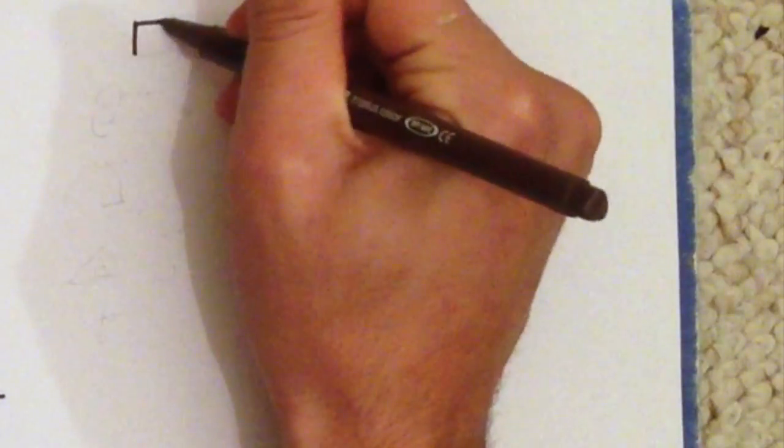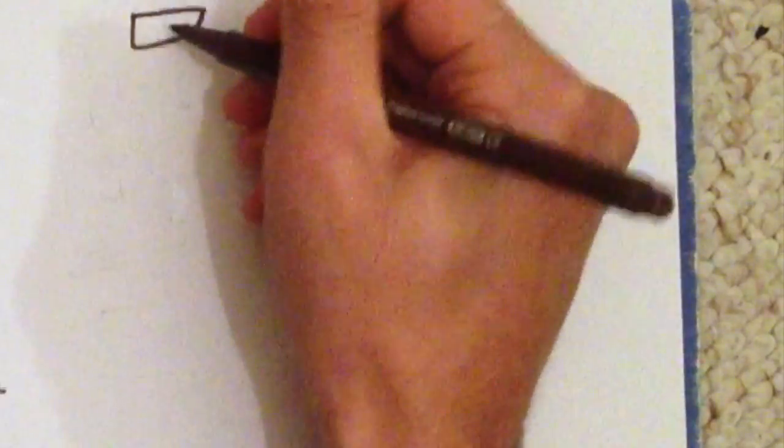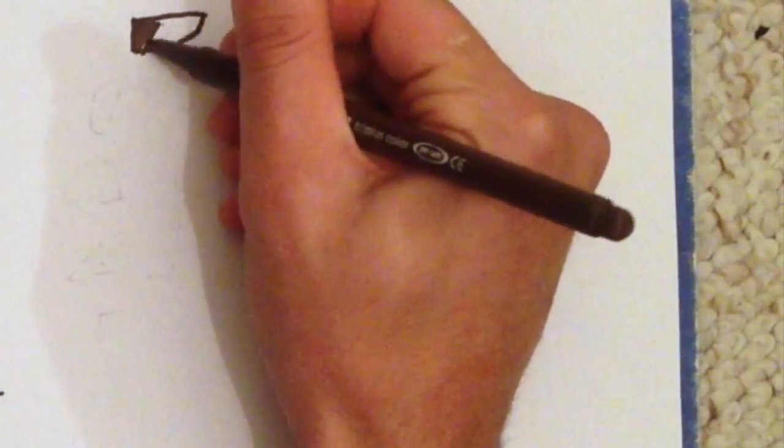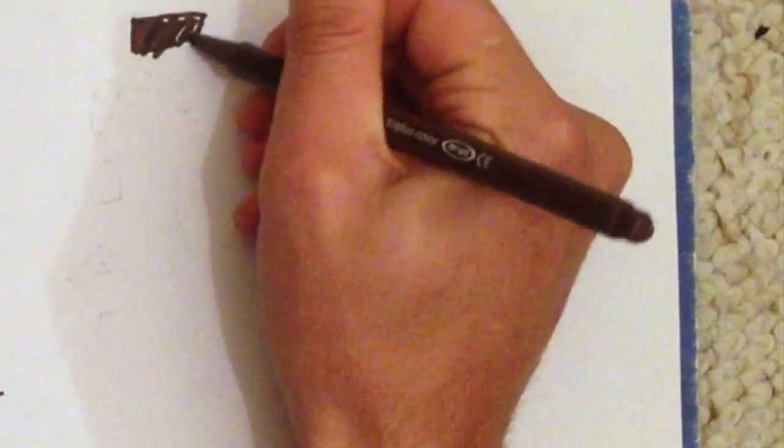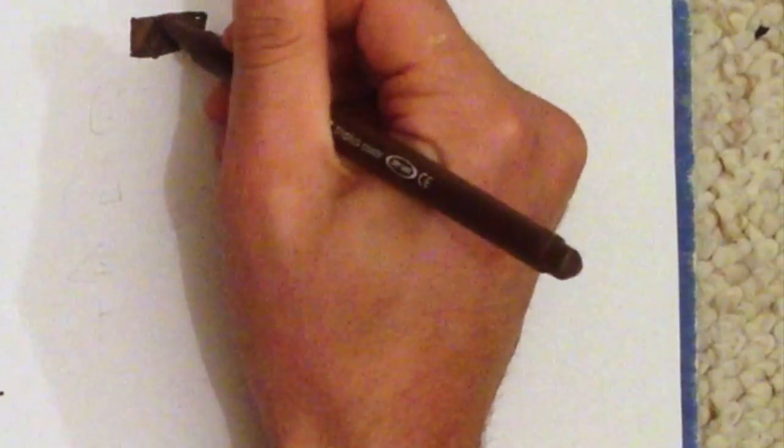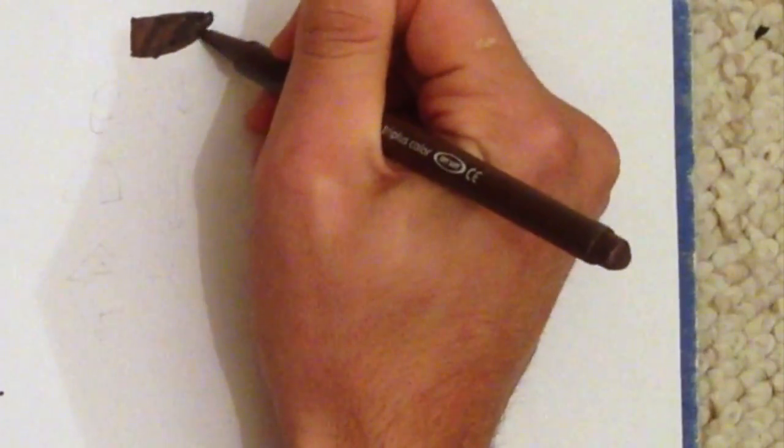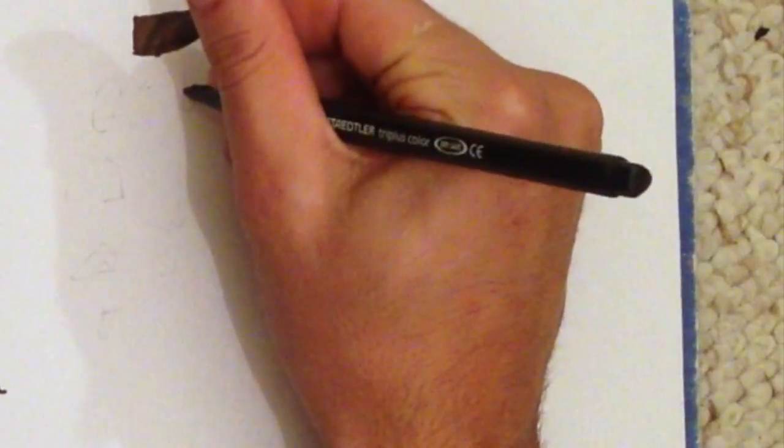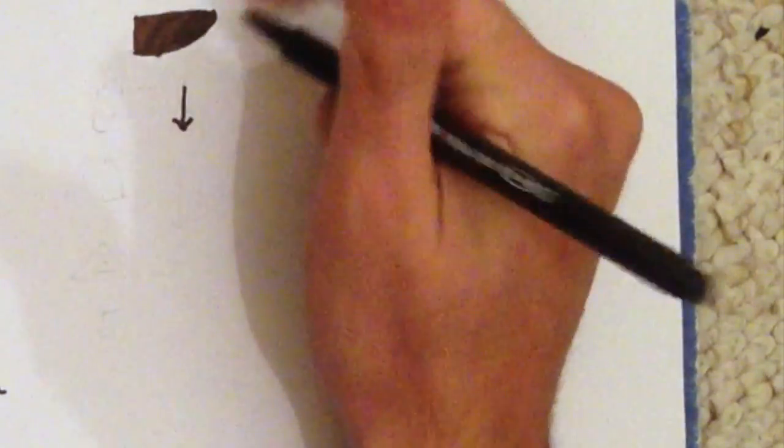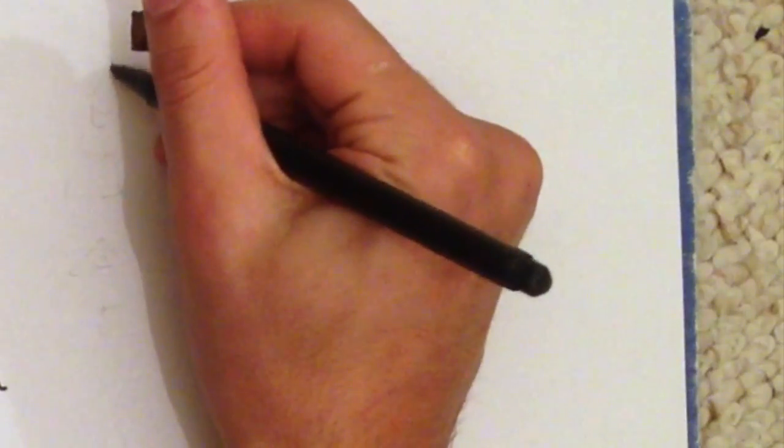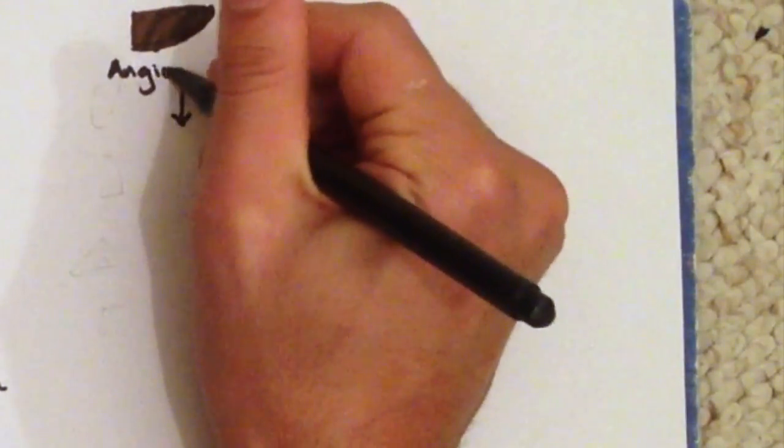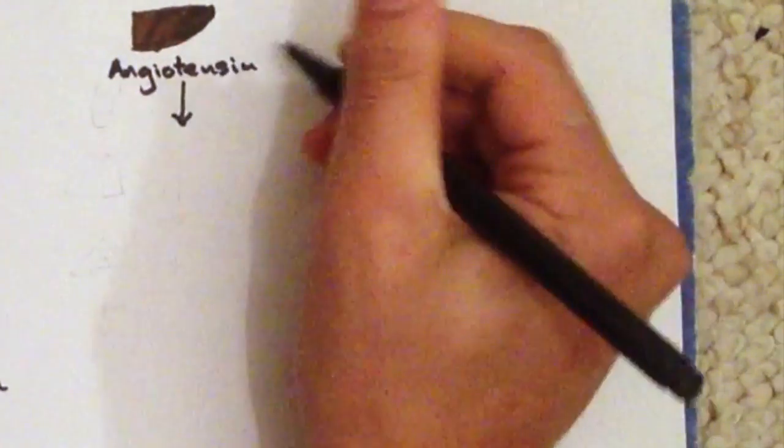So the next area I wanted to discuss was negative feedback loops, which are a really important part of endocrinology and the management of hormones in the body. The first I'm going to talk about is called the renin-angiotensin-aldosterone system. This is what regulates our aldosterone and has a role in monitoring our blood pressure and fluid levels.